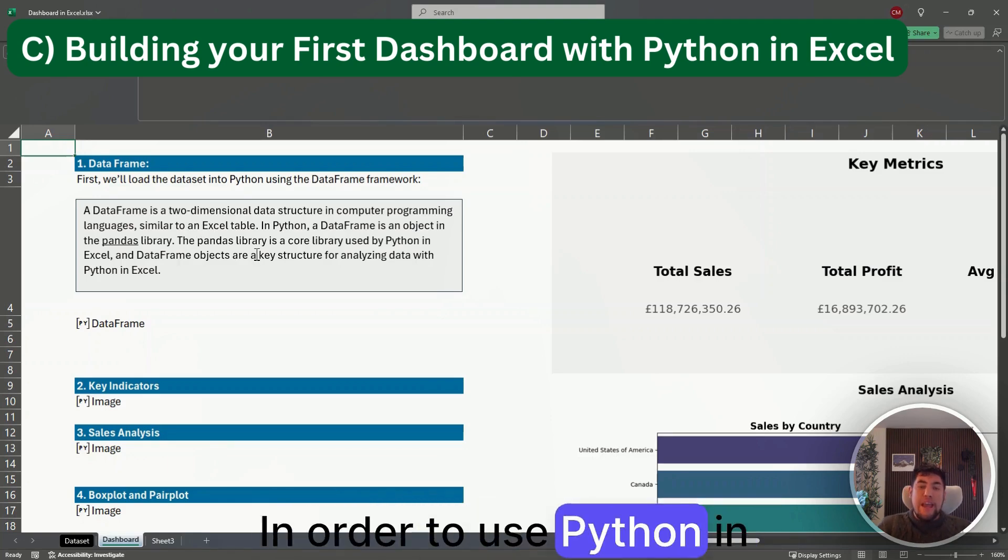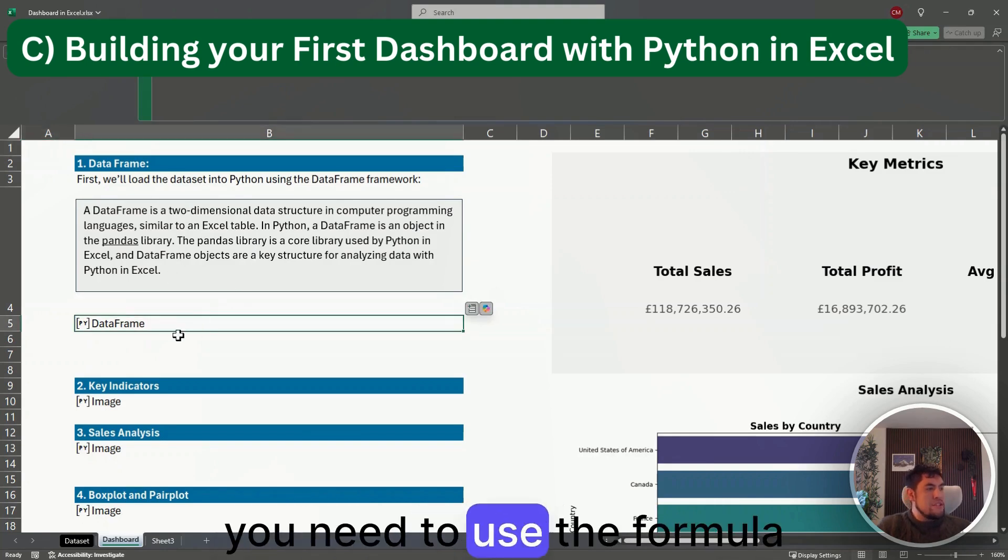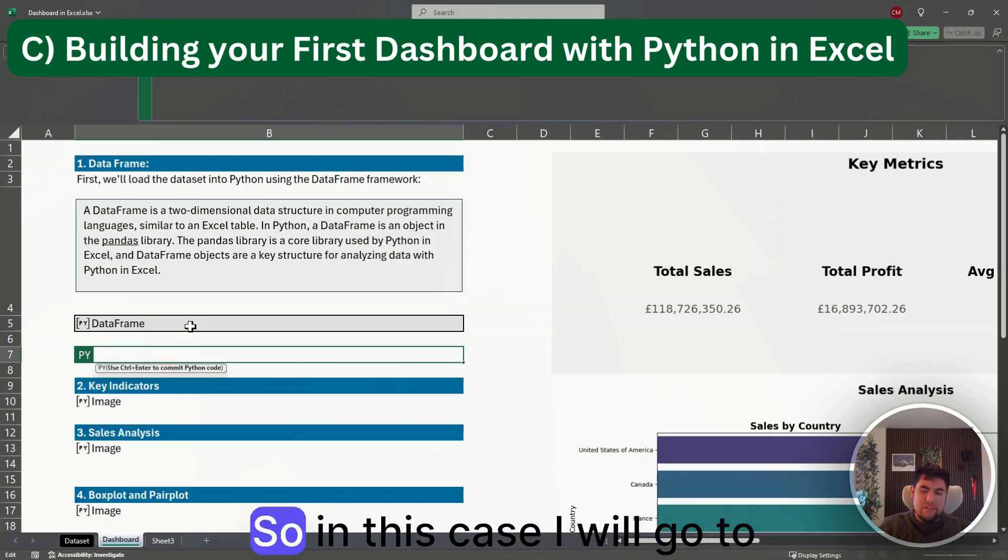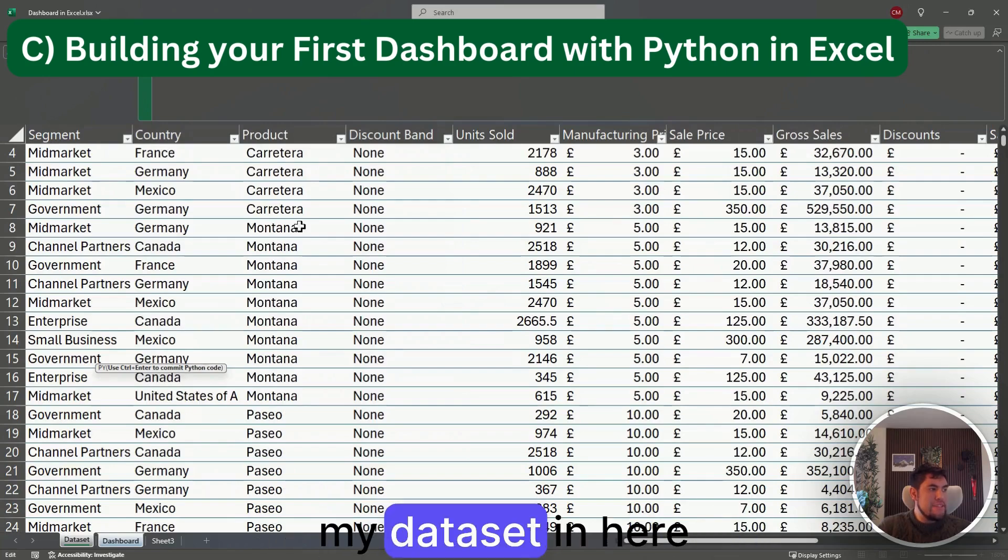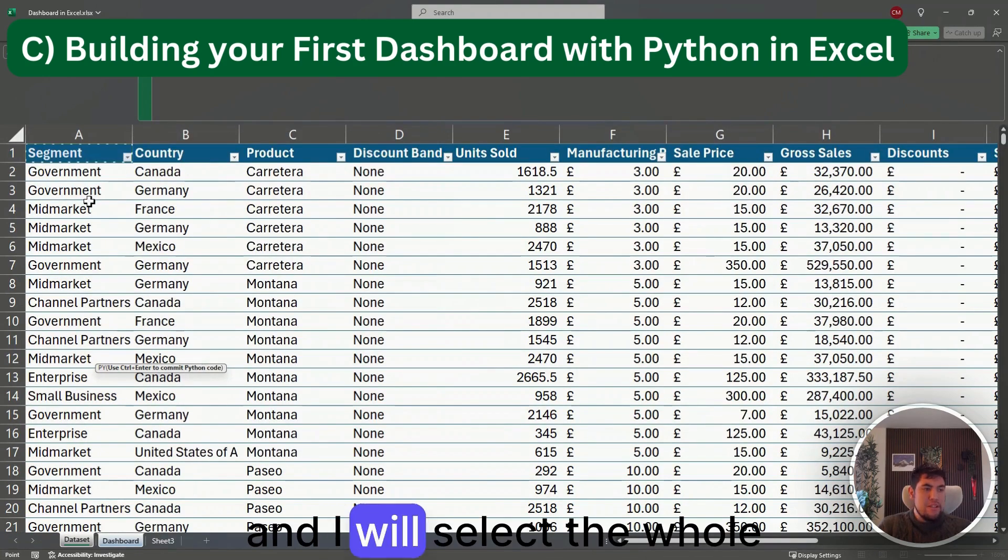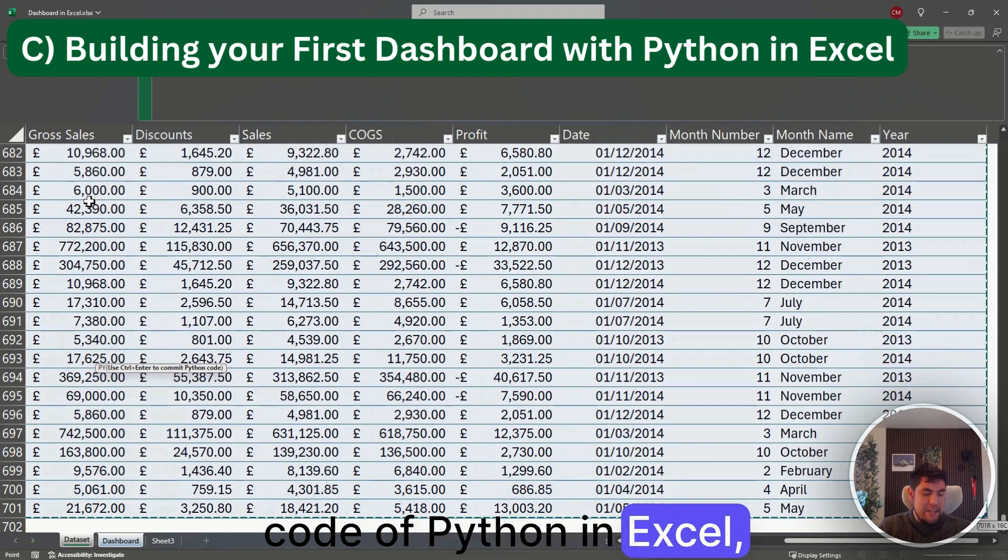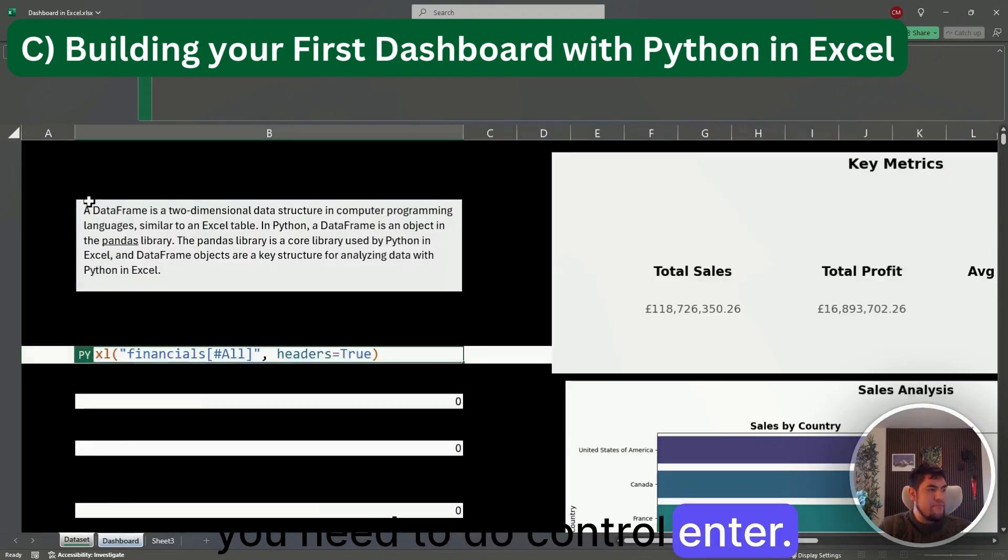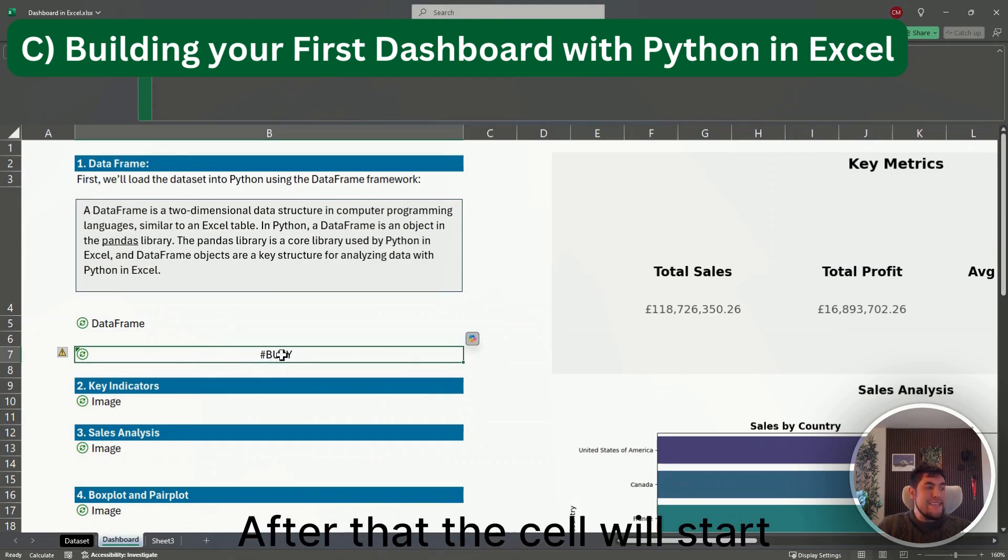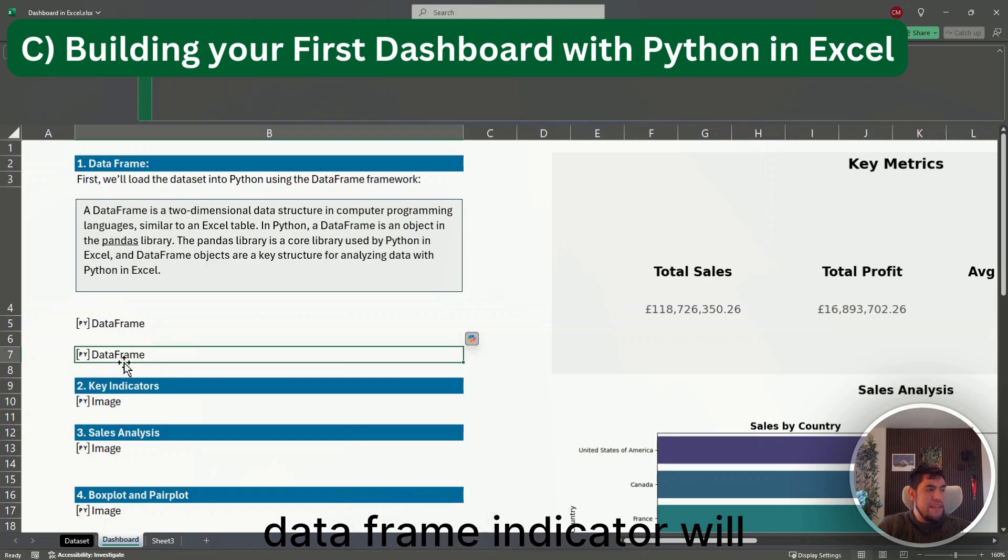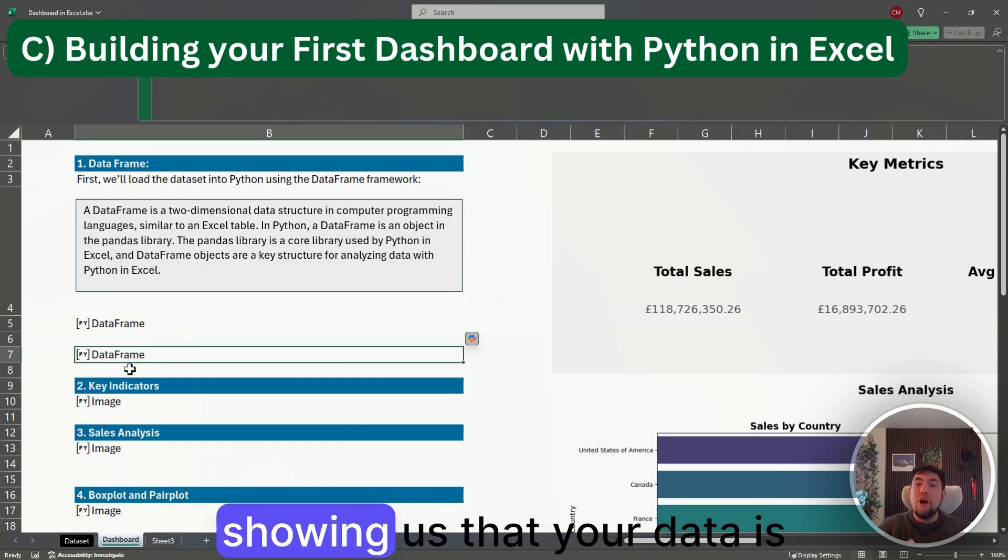In order to use Python in Excel, you need to use the formula xl. For this you do equal PY, open brackets, and then you go to your data set. So in this case I'll go to my data set and I will select the whole thing. Then to commit code of Python in Excel you need to do Control-Enter.